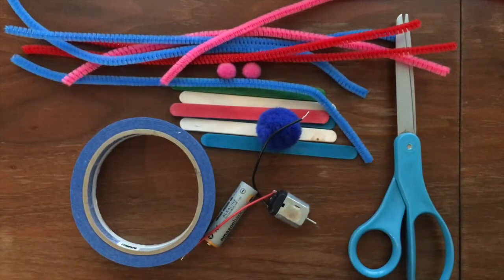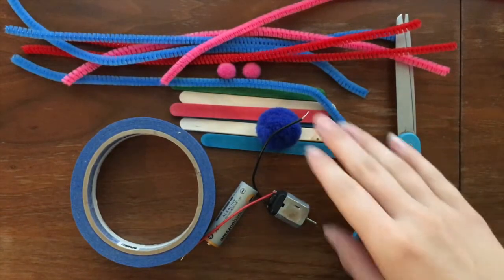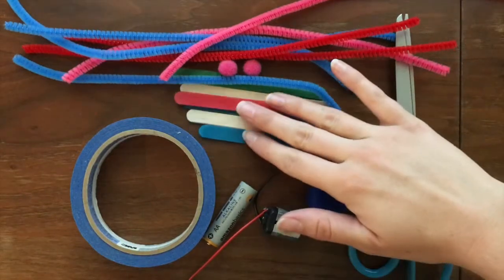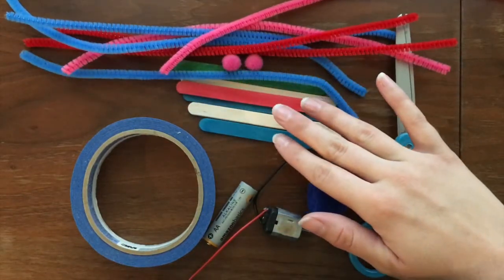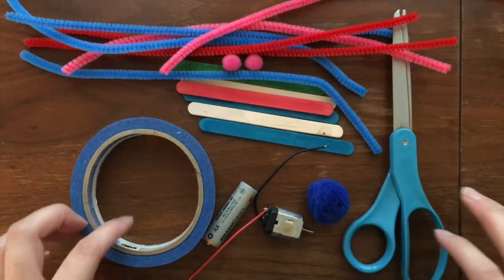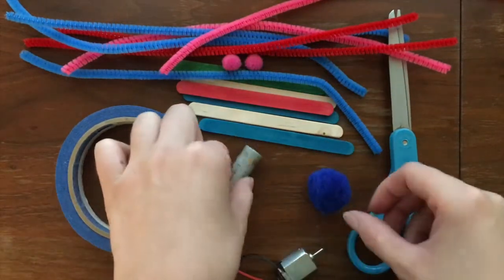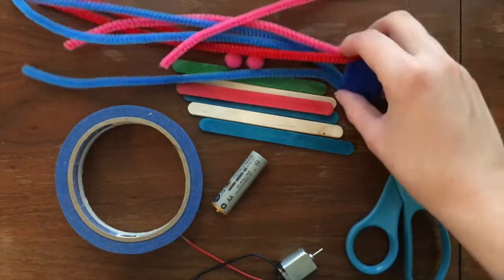So the supplies we'll need for today's activity is some popsicle sticks or anything just to make the structure of your WiggleBot, some scissors, some tape, a hobby motor, a battery, and any other extra supplies that you want.